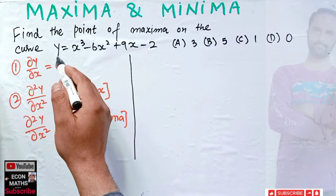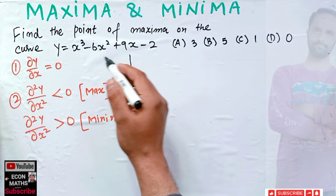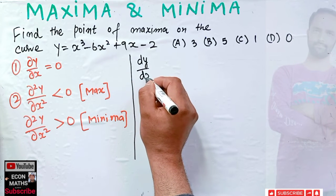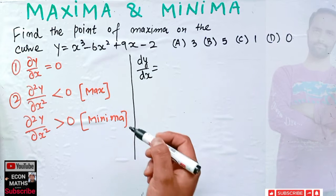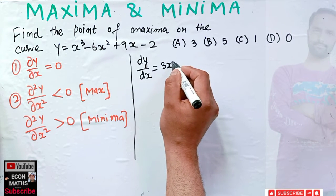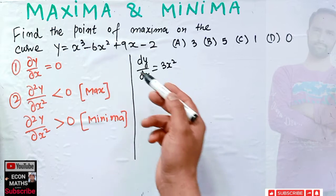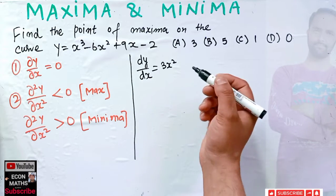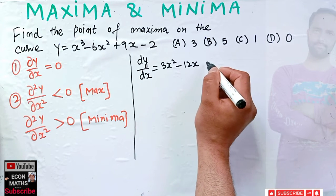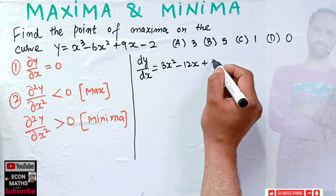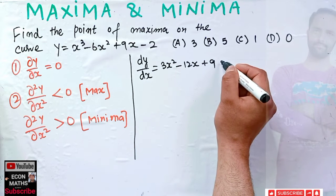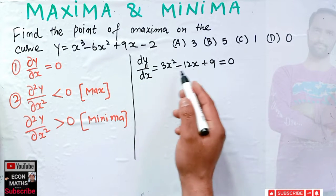Now dy/dx means taking the derivative of this function with respect to x and setting it equal to zero. So we get 3x² — using the power rule, 3 becomes the coefficient and the exponent is reduced by 1 — minus 12x plus 9, and the derivative of the constant is zero.